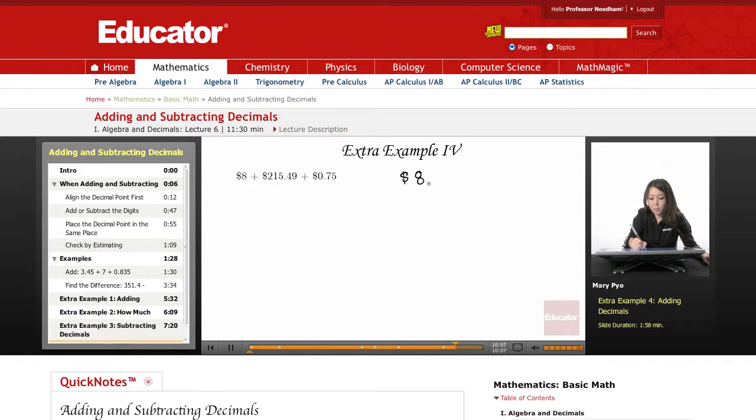So this is 8 point, and then I can add zeros to it. $8 is the same thing as 8.00, right?